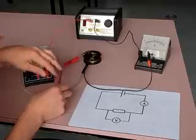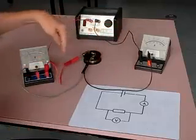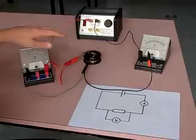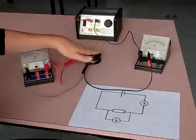So now we have a circuit, a closed circuit with a resistor and an ammeter, and a voltmeter in parallel with the resistor to measure the voltage across the resistor.